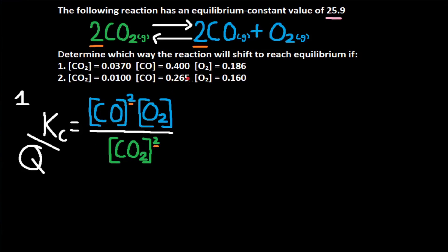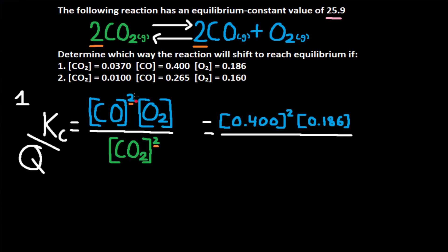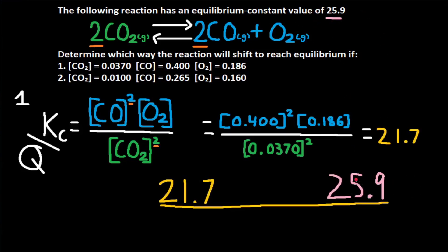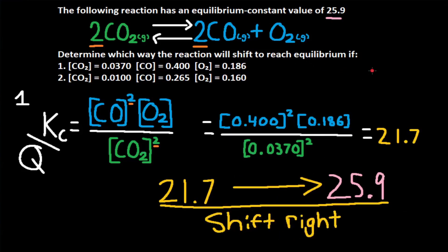For CO we have 0.400, for O2 we have 0.186, and for CO2 we have 0.0370. Using our calculator, we get Q equal to 21.7, and we compare this to the given Kc value. On a number line, the right side is bigger and the left side is smaller. 21.7 is on the left and 25.9 is on the right, so to get from 21.7 to 25.9 we go right. This will be a shift right to reach equilibrium.